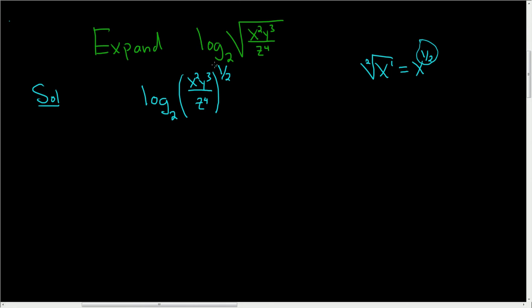Now we'll use the power rule and bring the one-half downstairs. So this is one-half log base 2 of x squared y cubed over z to the fourth.